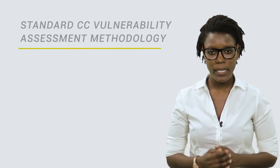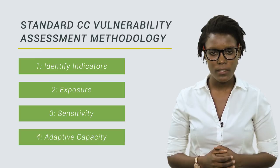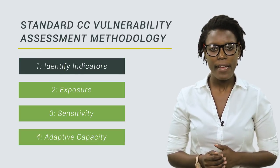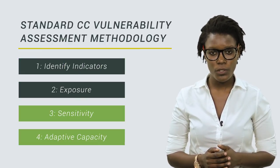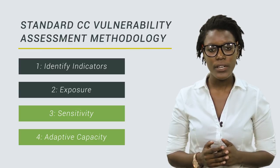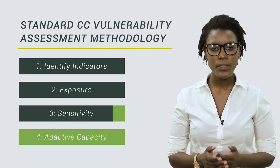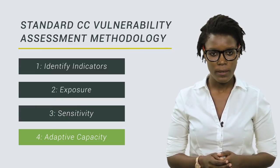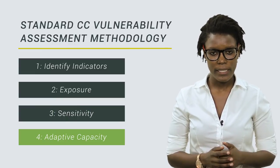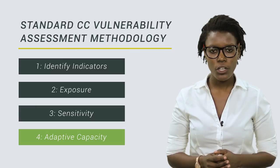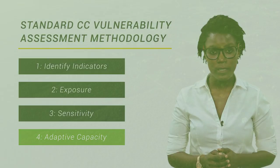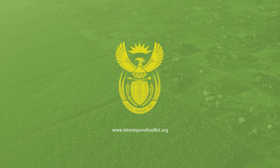You have now gone through steps one and two of the Climate Change Vulnerability Assessment. You have developed a list of climate change indicators through step one, and have assessed whether your area will be exposed to these indicators by answering yes or no in step two. In the next video, we move on to step three of the Vulnerability Assessment, which helps you to determine how sensitive your area is to the different climate change indicators.